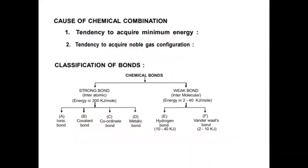What is the cause of chemical combination? There are two causes: one is the tendency to acquire minimum energy, and the tendency to acquire noble gas configuration, which means to attain an octet electronic configuration or stable electronic configuration.